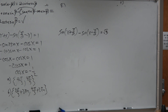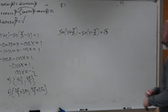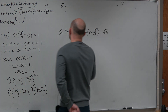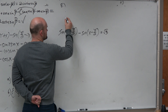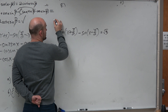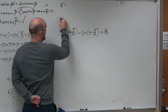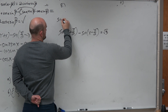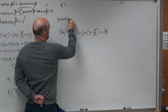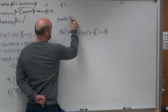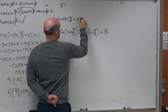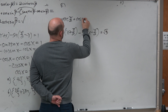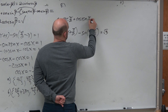So the first thing we want to do in this problem is apply the formulas. I'm going to do it above because I want a little more space. By applying the formulas here, I have sine of x times cosine of pi halves, plus cosine of x times sine of pi halves.